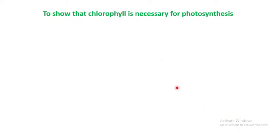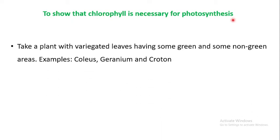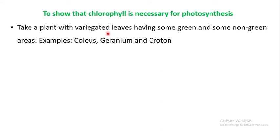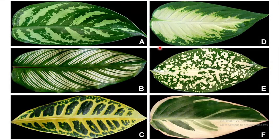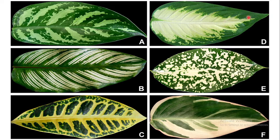The next experiment is to show that chlorophyll is necessary for photosynthesis. We take a plant with variegated leaves — leaves that are not fully green and have some other colors as well. Examples include Coleus and Tradescantia. These variegated leaves have white patches, white stripes, or white dots alongside green patches.